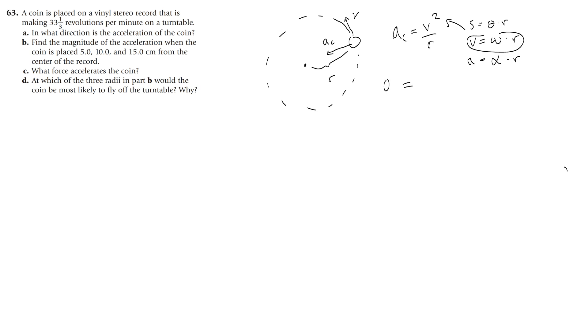So that what we get for the centripetal acceleration is omega times R squared over R, which is going to be omega squared times R squared over R. Two of those R's will cancel, and you would get omega squared times R.